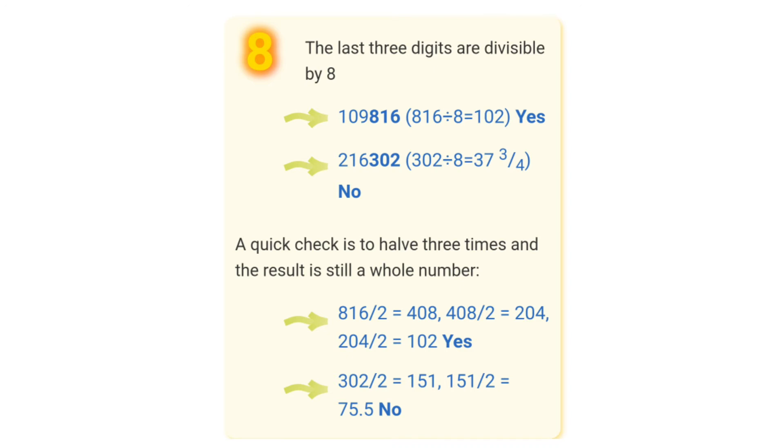26,302. The number formed by last 3 digits is 302. When we divide 302 by 8, we get quotient as 37 and remainder as 6. Since 302 is not divisible by 8, therefore 26,302 is also not divisible by 8.